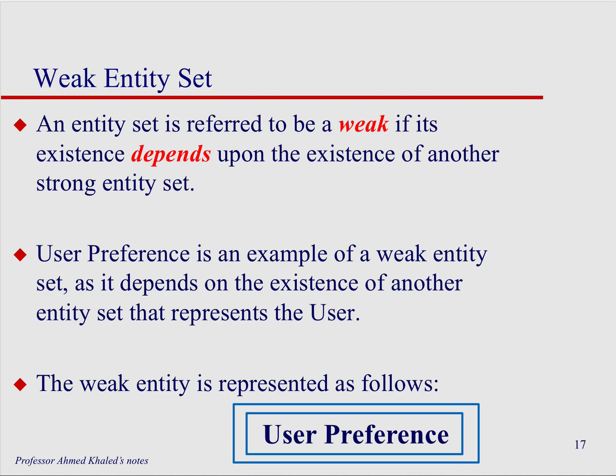So what's a weak entity? A weak entity is an entity that exists but really depends on the existence of another entity — otherwise it wouldn't exist. For example, user preference is a weak entity. You need a user entity for it to exist. If there is no user entity, then there's no user preference entity.